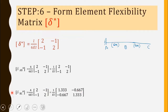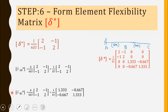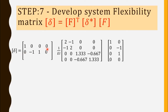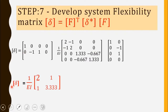Combining all element flexibility matrices into a single block-diagonal matrix, delta-star equals (1/EI) with the AB matrix [2, minus1; minus1, 2] and BC matrix [1.33, minus0.667; minus0.667, 1.33] placed diagonally. The seventh step is to develop the system flexibility matrix using delta equals F-transpose times delta-star times F. We already have F-transpose, delta-star, and F, so we multiply all three matrices.